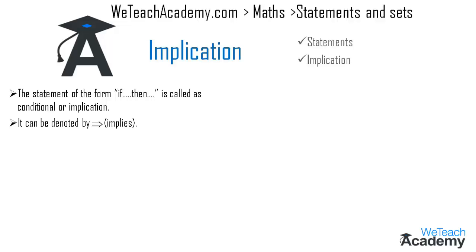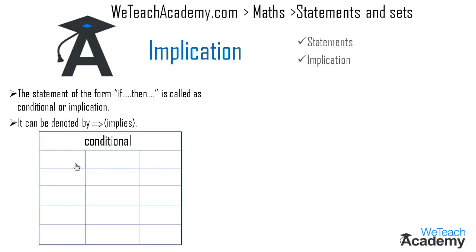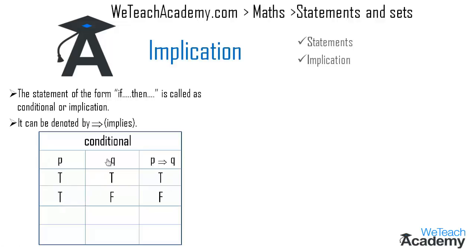We can also define implication with the help of a truth table. Here we have three columns: the first two columns give the truth values for p and q, and the last column gives the truth value for p implies q. If both statements p and q are true, then p implies q is true. If p is true and q is false, then p implies q is false.